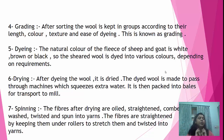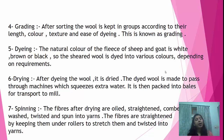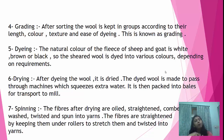The seventh step is spinning. The fibres after drying are oiled, straightened, combed, washed, twisted, and then spun into yarns. The fibres are straightened by keeping them under rollers to stretch them, then twisted into yarns, and from yarns, fabric is formed.